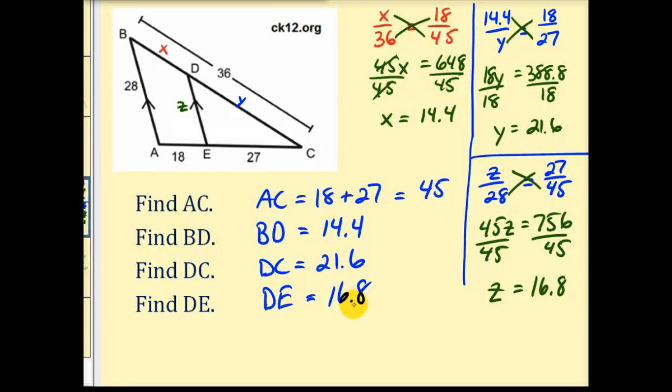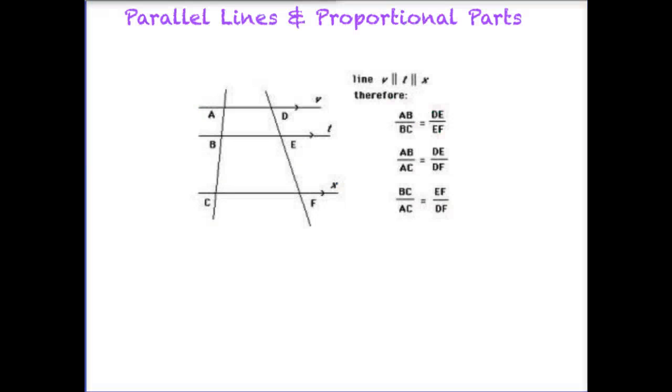Let's look at one other type of proportionality problem. This is now dealing with parallel lines. What we have here is line V, T and X. And up here it says line V parallel to line T parallel to line X. So in other words, and we can see by these arrows that all these lines are parallel. If that's the case, we have the same proportionality theorem.